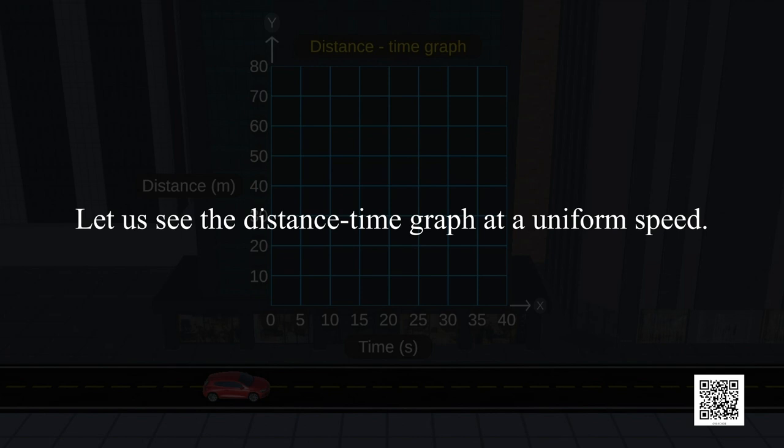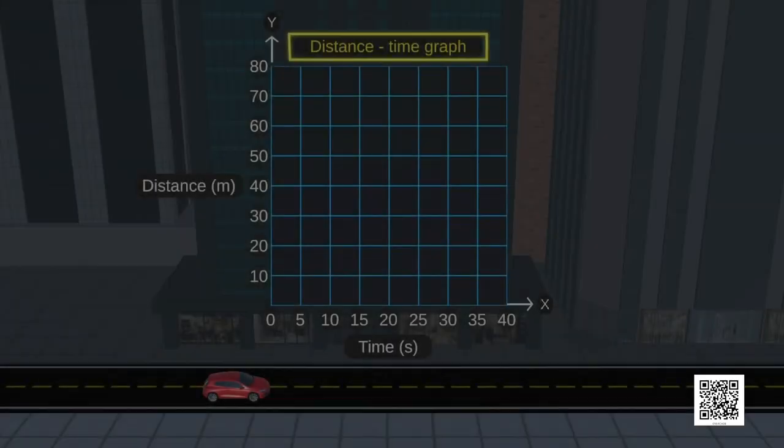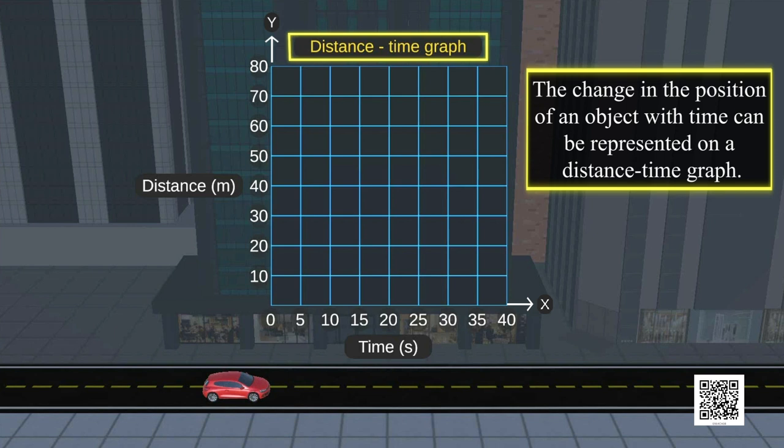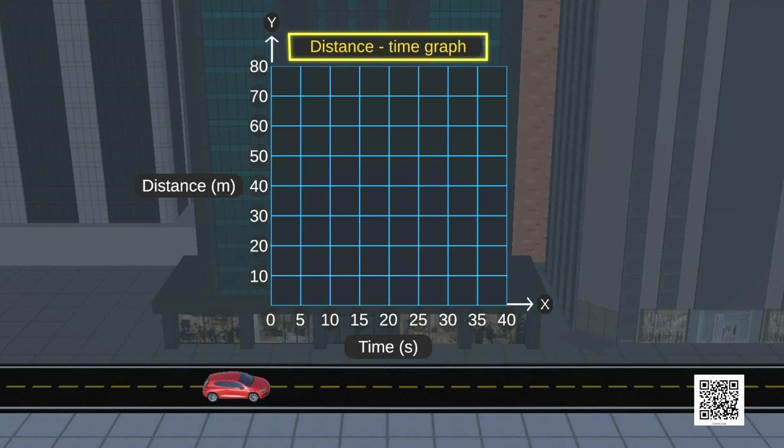Let us see the distance-time graph at uniform speed. The change in the position of an object with time can be represented on a distance-time graph. Here, in this activity, we will try to explore the distance-time graph of an object